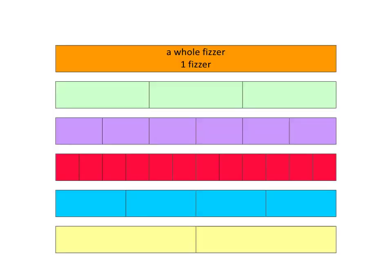Today we're just going to remind ourselves about the basics of fractions using fizzers. In front of you here I've drawn a picture of one, two, three, four, five, six different coloured fizzers and at the top we've got one beautiful whole fizzer, a nice orange fizzer.